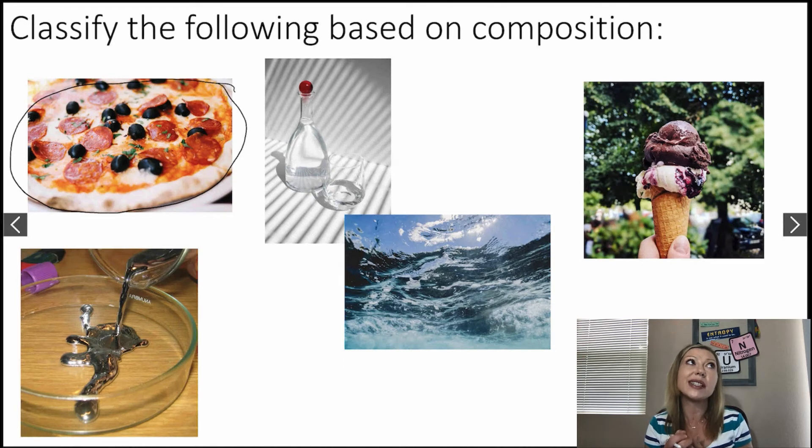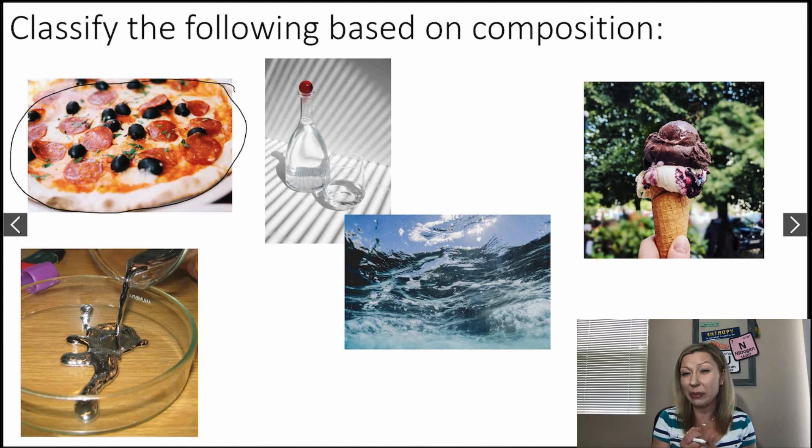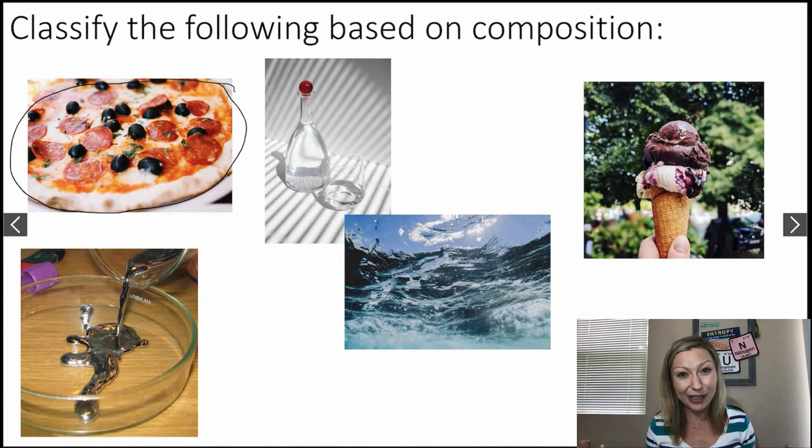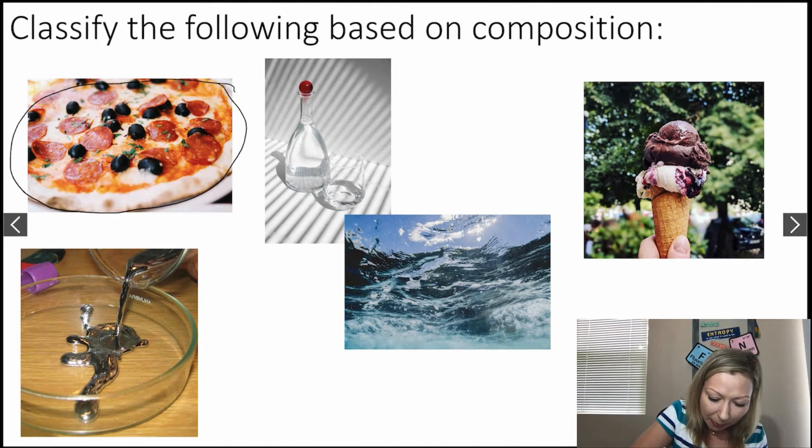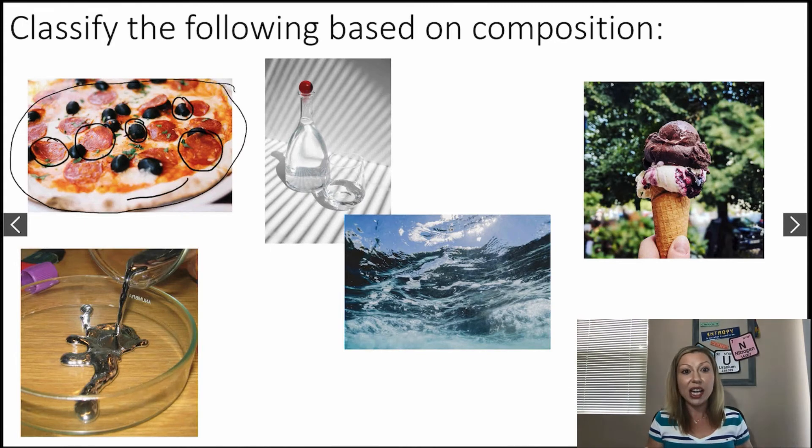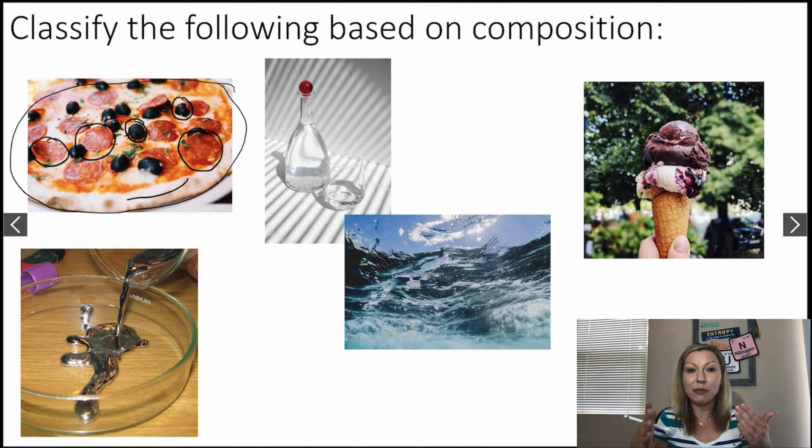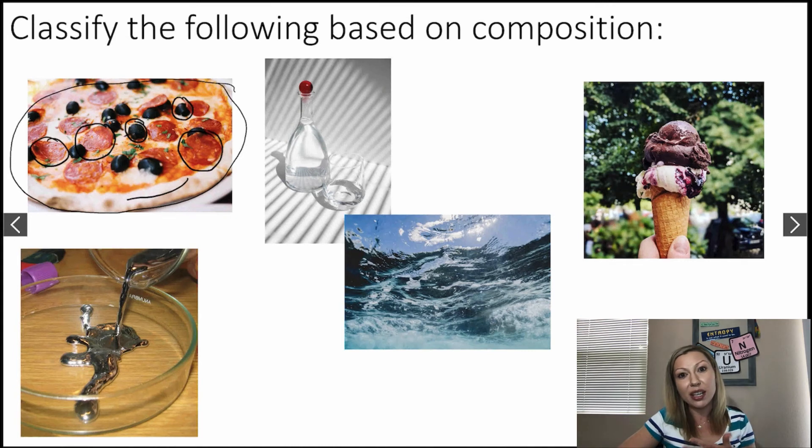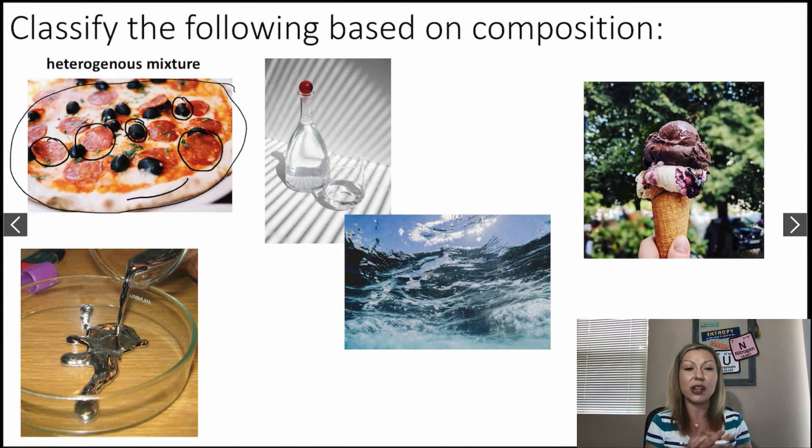Well, if it's a pure substance, then I would have to think about elements. Do we have an element named pizza? That would be fun, but unfortunately we do not, right? And actually, if you look at a pizza, you can see where is the pepperoni, and where are the olives, and all the other parts, and where is the crust, right? So it's not the same composition everywhere. So this means that we are going to have a mixture which is going to be a heterogeneous mixture.